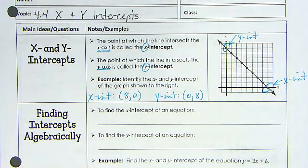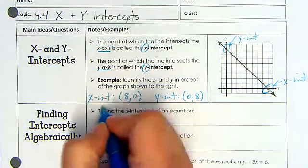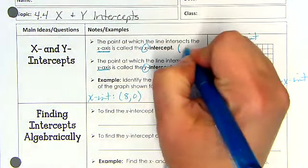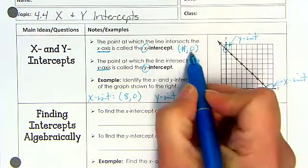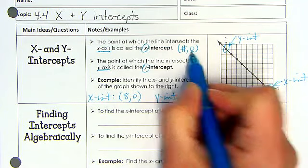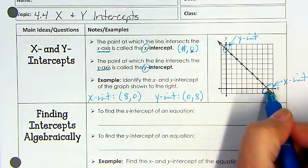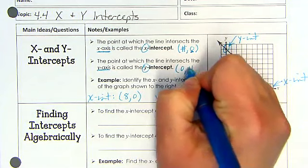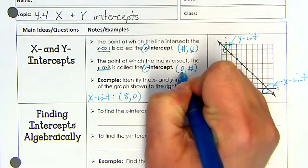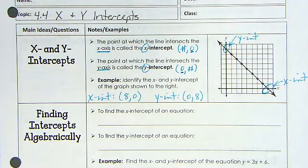Notice the x-intercept is always going to be some number comma 0. The 0 is in the y spot. For the y-intercept, it is 0 comma some number. The 0 is in the x spot. Just an observation to help you to remember how the ordered pair should be written.